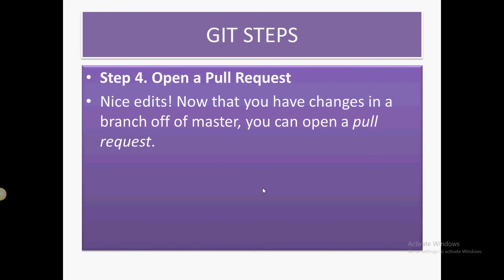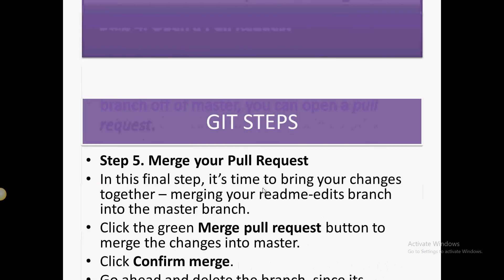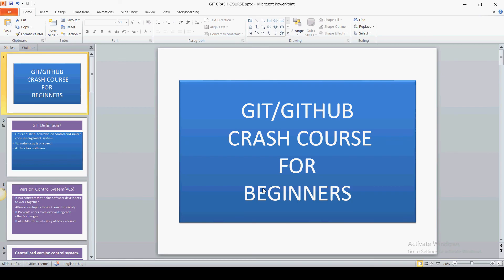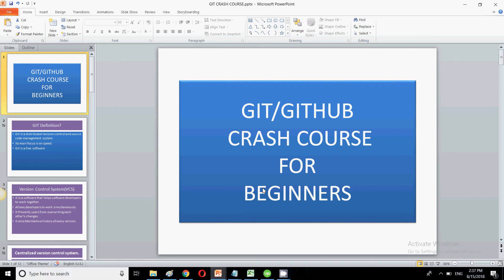Then we have push and pull requests. Before doing anything on GitHub, you need to pull all the latest version so you have everything that was on the server. Once everything is done, you push it to the main branch so the latest version is on the server, and when a new developer starts working, they get a fresh, latest copy from the server.